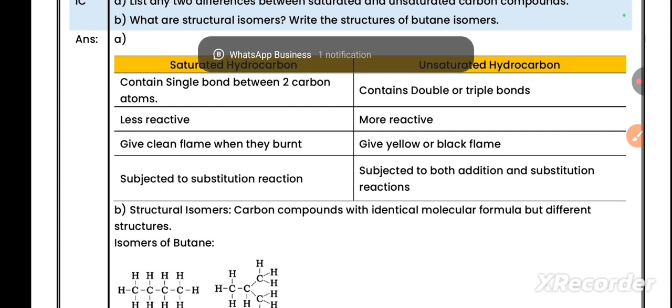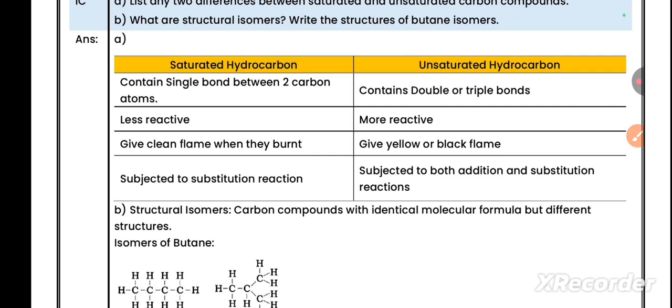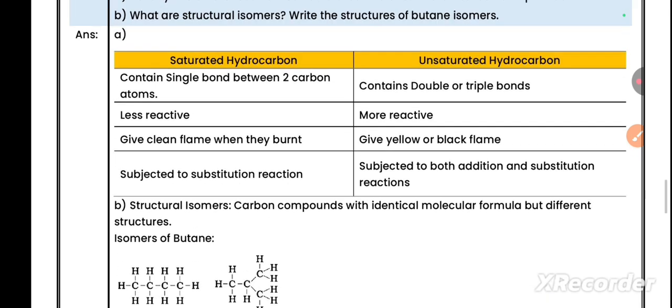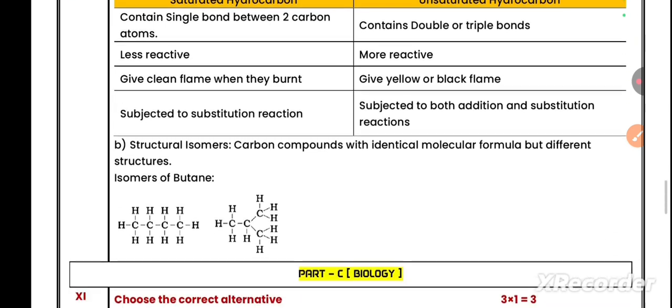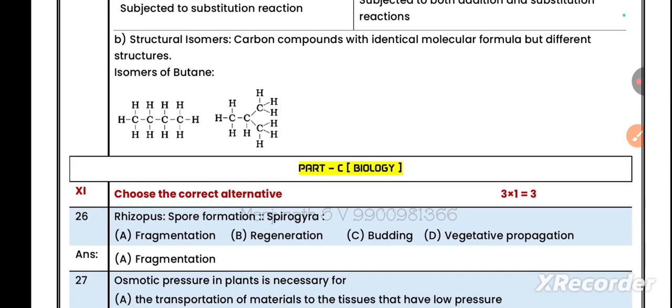Question B: What are structural isomers? Write the structures of butane isomers. Structural isomers: carbon compounds with identical molecular formula but different structures. Isomers of butane: normal butane (C4H10) and isobutane.